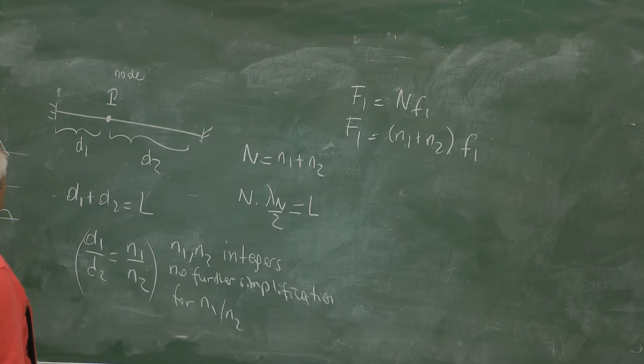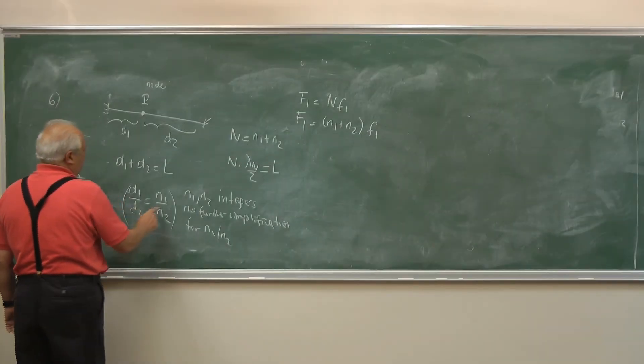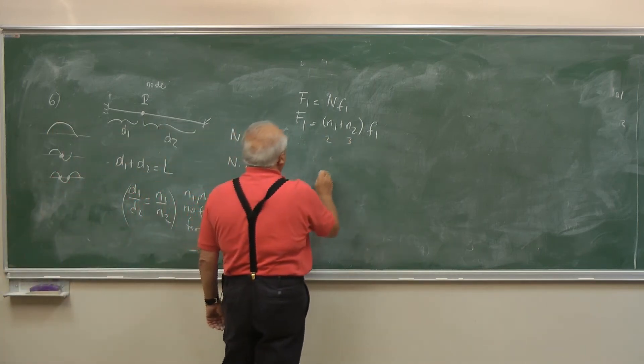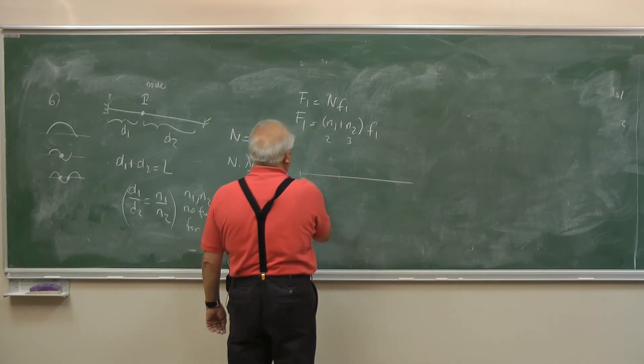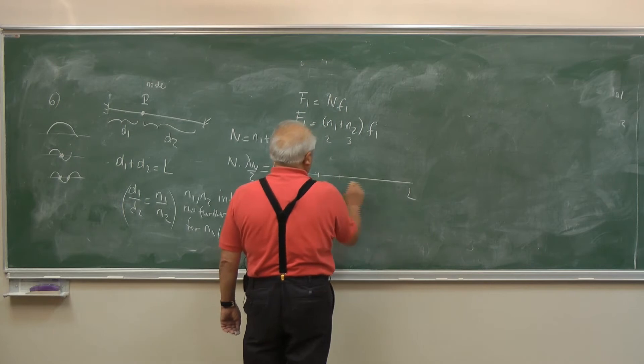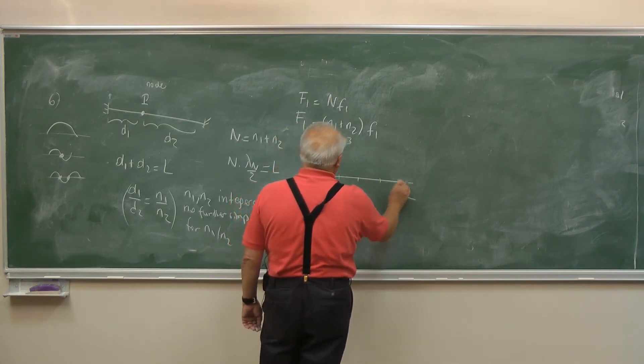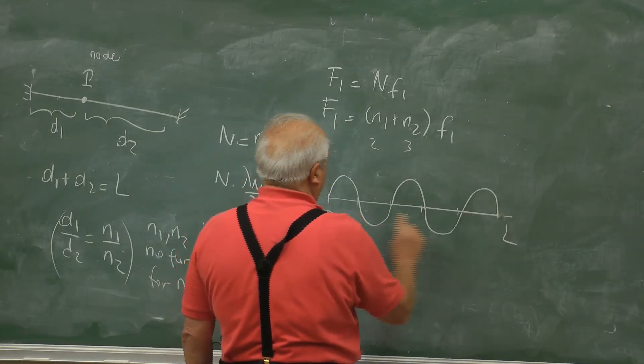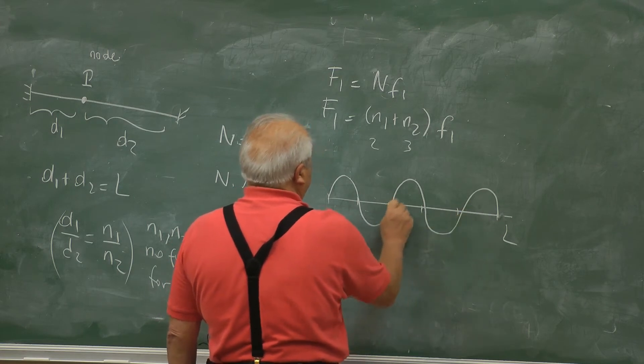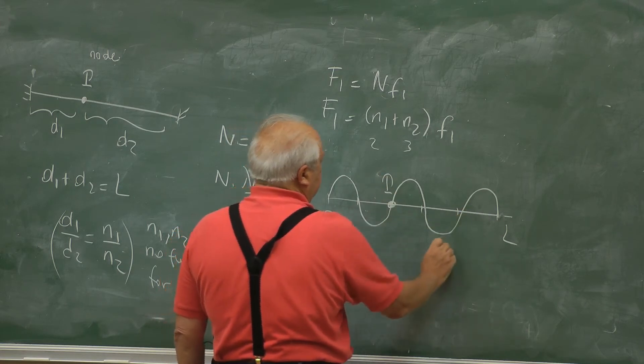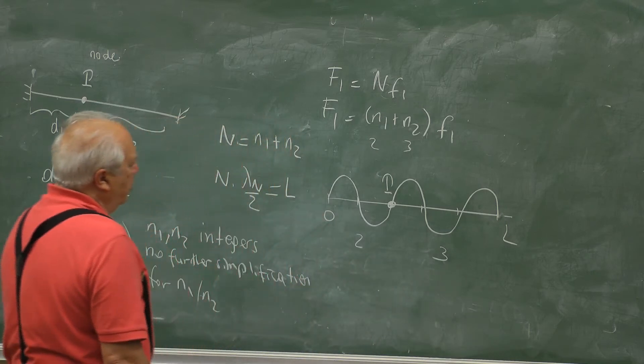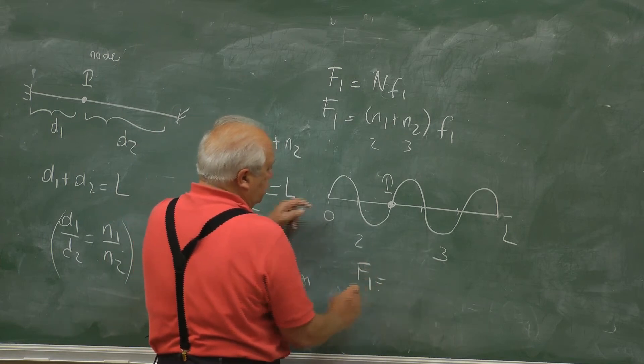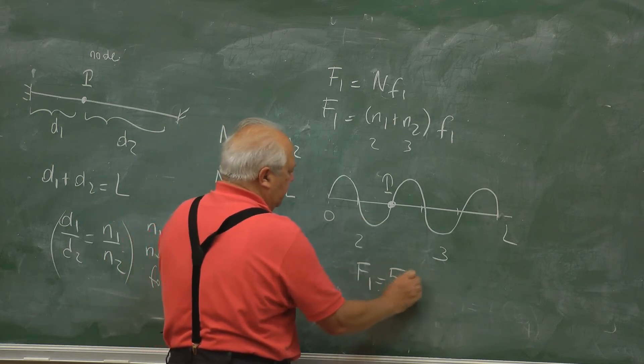For example, let's take 2 and 3. That means here is P. So this is P, 2 bubbles here and 3 bubbles there. So obviously, the frequency of it is f1. The lowest frequency heard in this case will be 5 times f1.